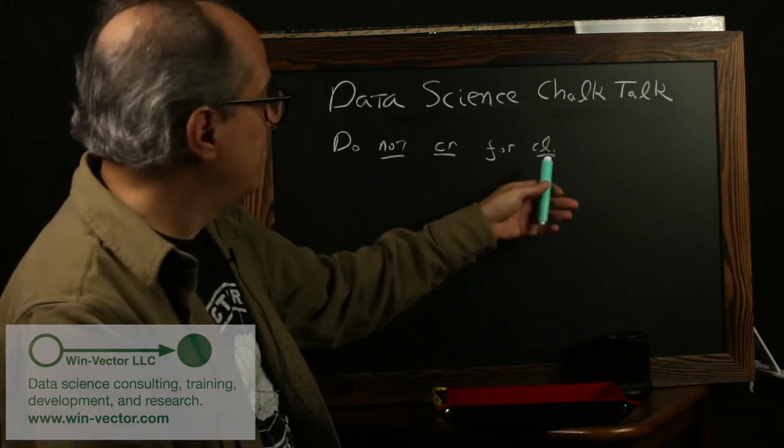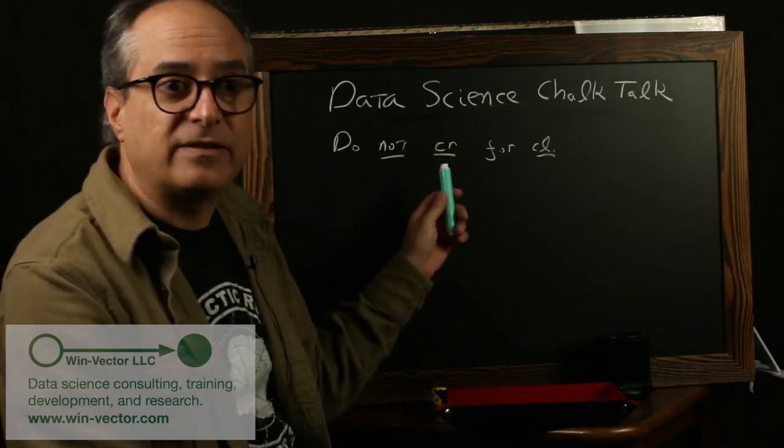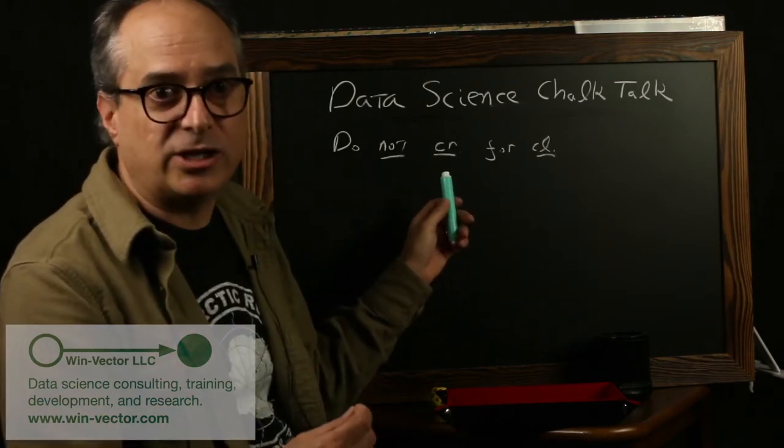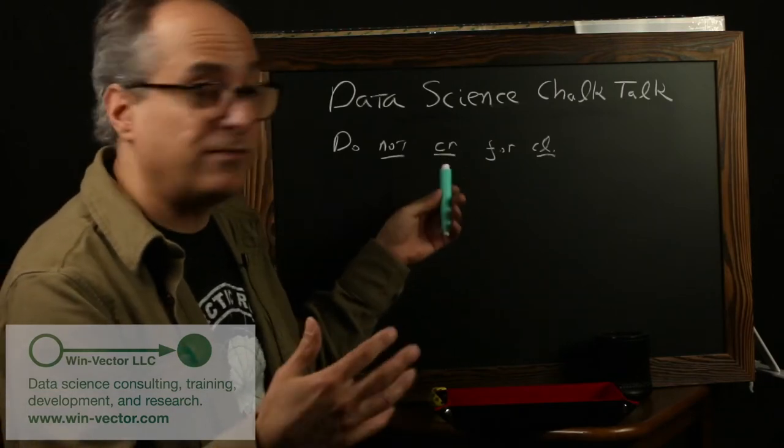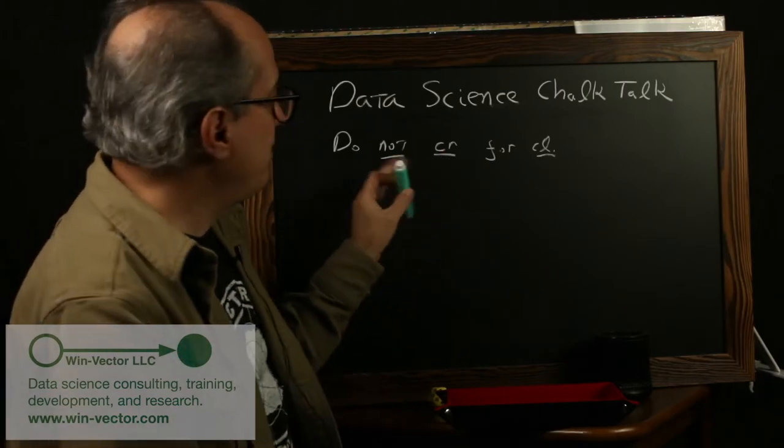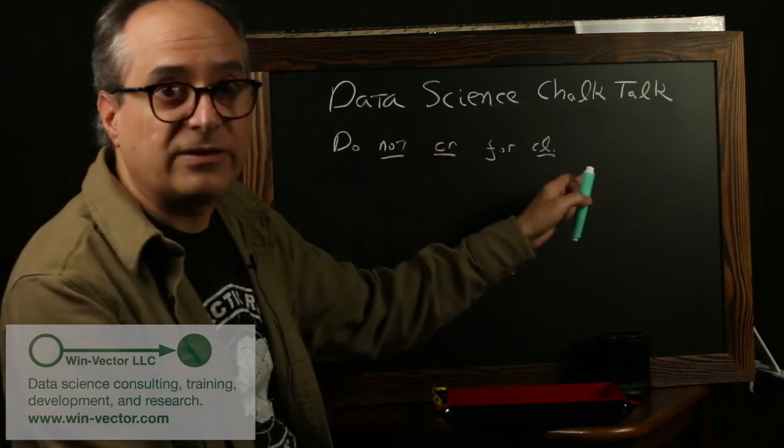Now, a classification rule is a piece of software or mathematics that makes the same sort of determination. If it's in the true class, maybe this would predict true, hopefully, or maybe false, not hopefully. Now what we're saying is, never use a classification rule for a classification problem.